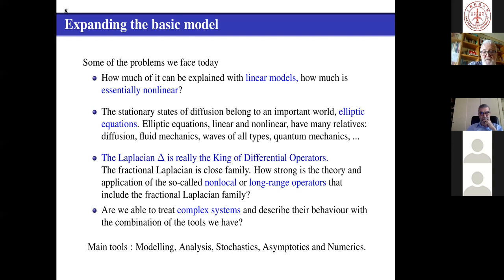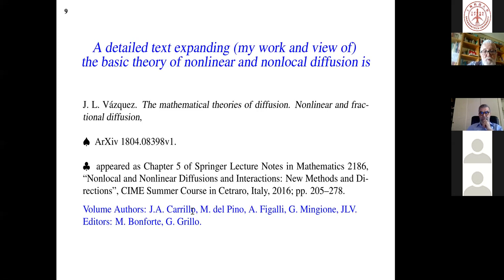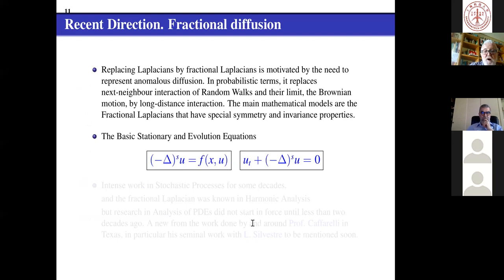The main tools we use combine five kinds of people: modeling, analysis, stochastics, asymptotics and numerics. If you look at this mix of five elements you will find that you need all of them and you work mainly on one of them. I wrote a book two years ago about the summer course we did in Cetraro with some of the people that will be present here and it relates most of what we were doing in the time. I will not go to discuss what is fractional diffusion only tell you for the benefit of the people who want to have a nice introduction.